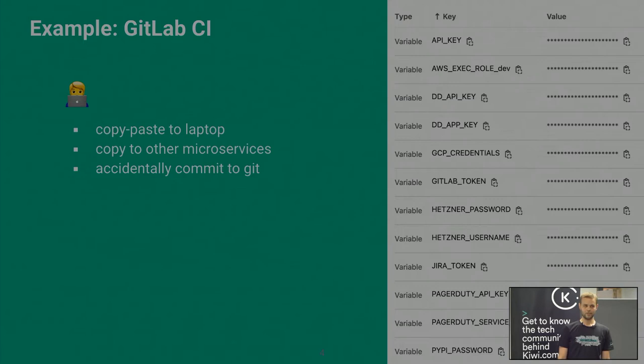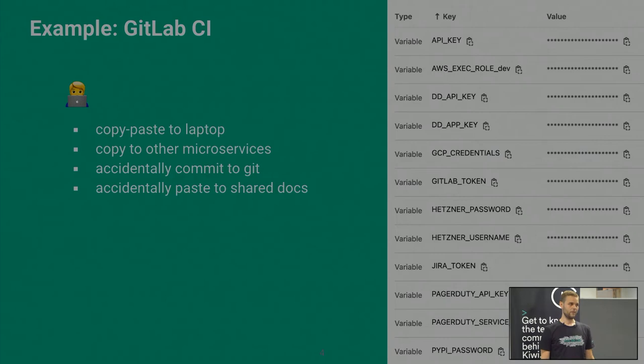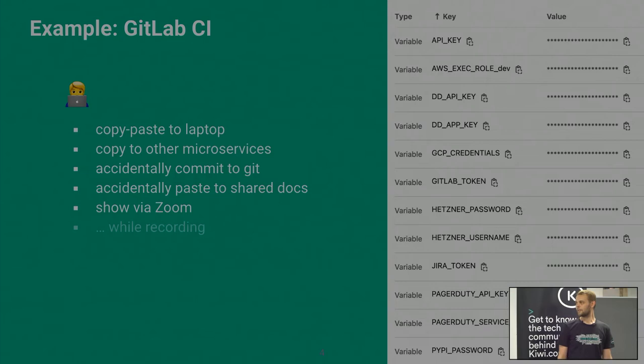Of course, people accidentally commit secrets to Git all the time. They copy-paste them to shared docs and it's visible in the history to others. They show it via Zoom, especially while recording the screen. Then the secret is leaked again. This is all just too much pain.